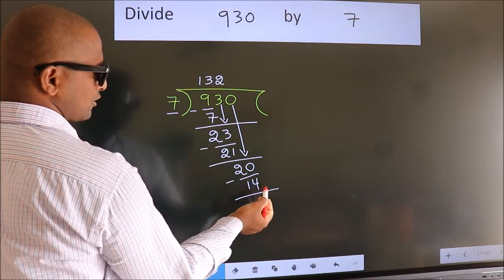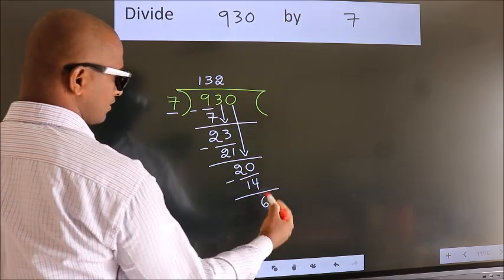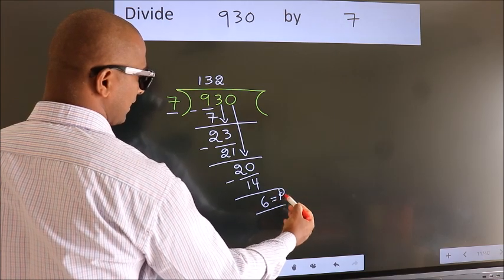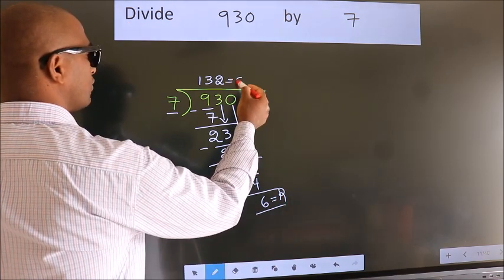No more numbers to bring down. So we stop here. This is our remainder. This is our quotient.